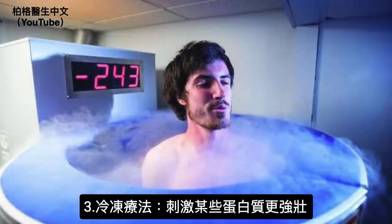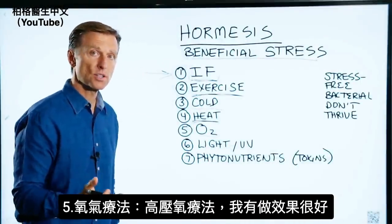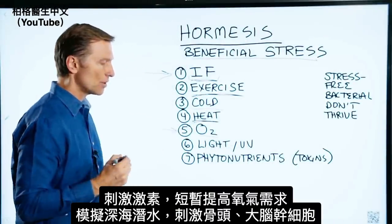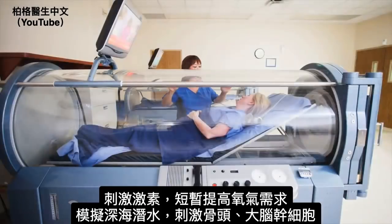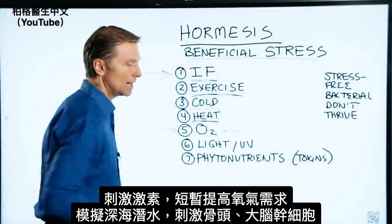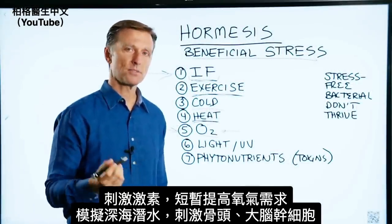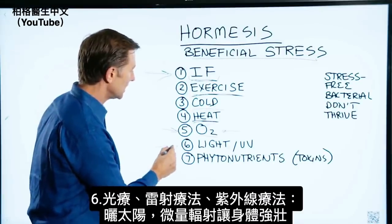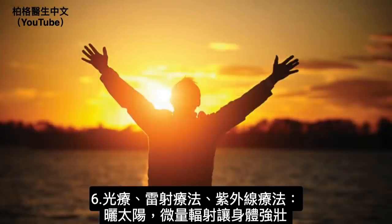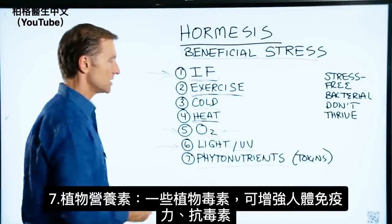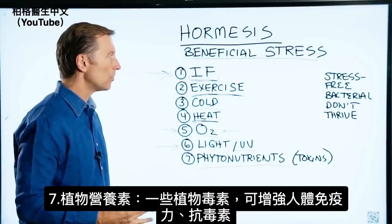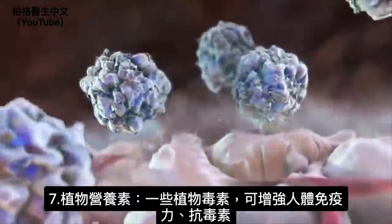Cold therapy, or cryotherapy, can stimulate certain proteins that become stronger. Heat therapy — like a sauna or infrared sauna — is very powerful. Oxygen therapy, specifically hyperbaric oxygen therapy, creates a hormetic effect by spiking oxygen and then bringing it down, simulating deep-sea diving. It stimulates stem cells in your bones and brain. There's also certain light therapy, laser therapy, UV light, and just going out in the sun — even a small amount of radiation can be beneficial because your body rebounds and becomes stronger. Even phytonutrients, which are considered toxins in plants, can help build up our own body's defenses.